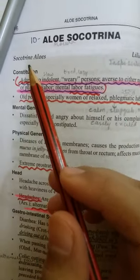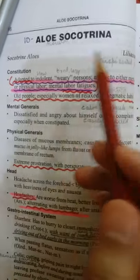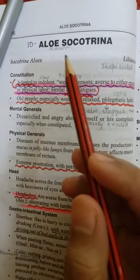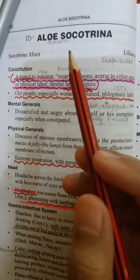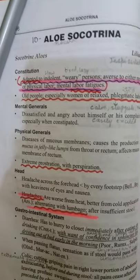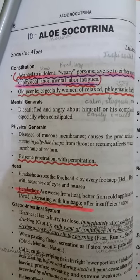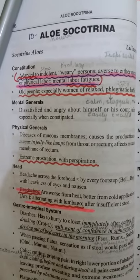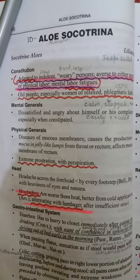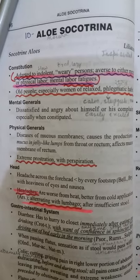Aloe Socotrina — common name: Socotrine Aloe — belongs to the family Liliaceae. The remedy is derived from the aloe vera plant, which you all must have seen: a green plant beneficial for our face, skin, and hair. Many people use aloe vera, and that plant is the source of Aloe Socotrina.